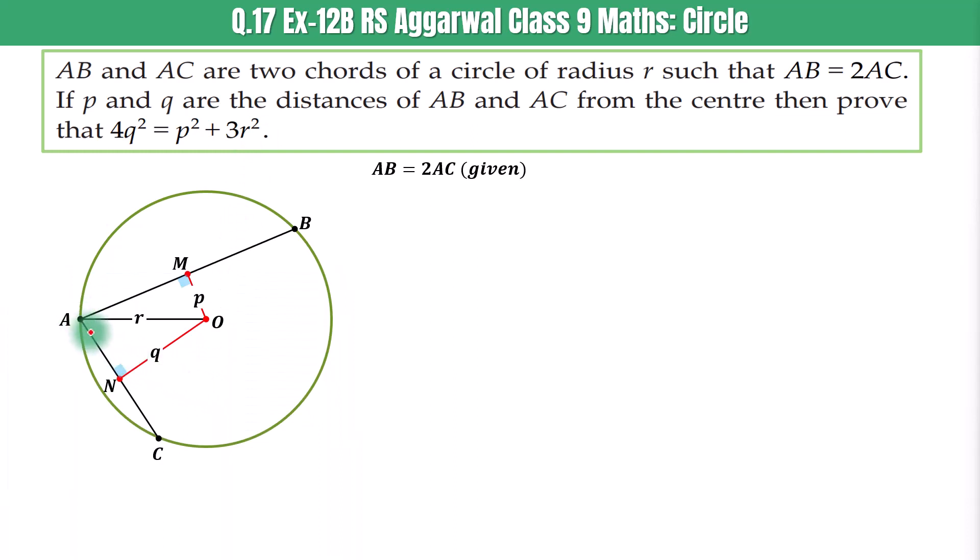Let us assume that length of AC is equal to X. So AB is equal to two times AC that is why AB is equal to 2X. Since OM is perpendicular on AB and ON is perpendicular on AC that is why AM is equal to half of AB that is X and AN is equal to half of AC that is X by 2.